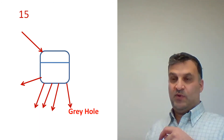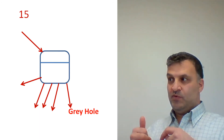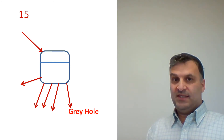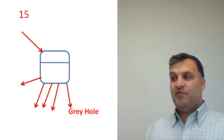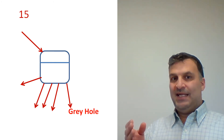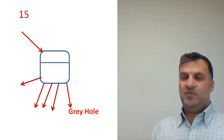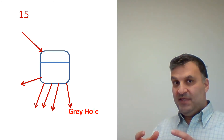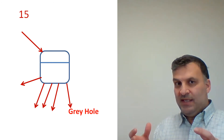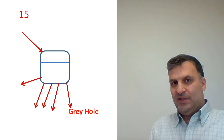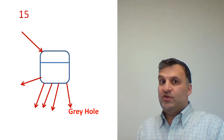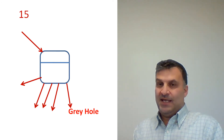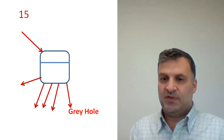What happens here: we have only one input and many outputs. With normal processes, the number of outputs should be less than the inputs, because a process in DFD should do something with data to produce information. Usually it consumes more inputs than it produces outputs.